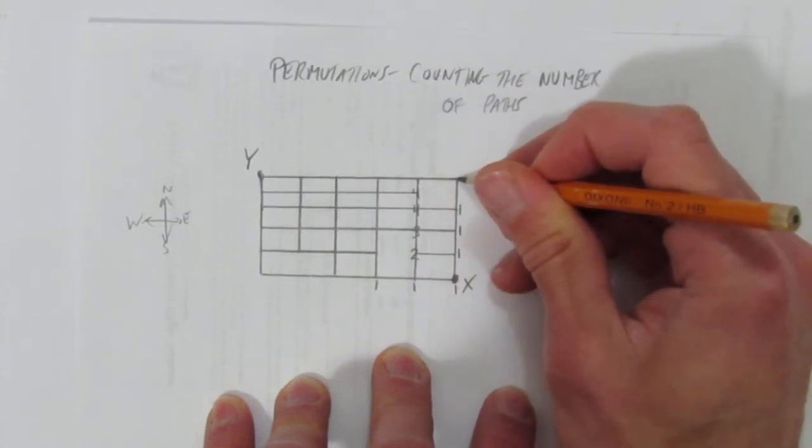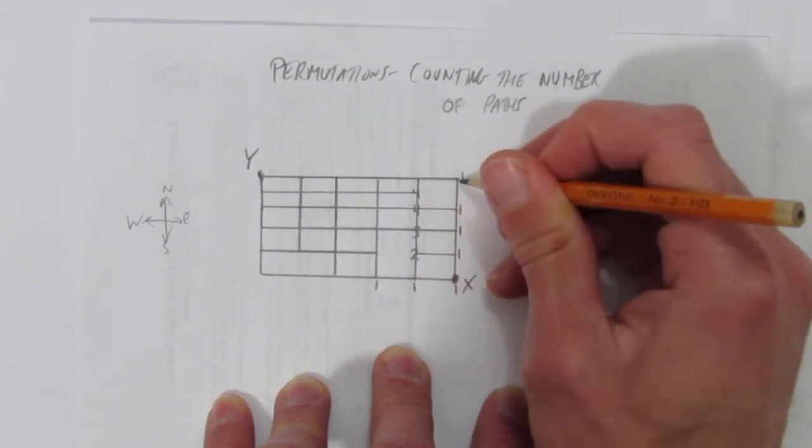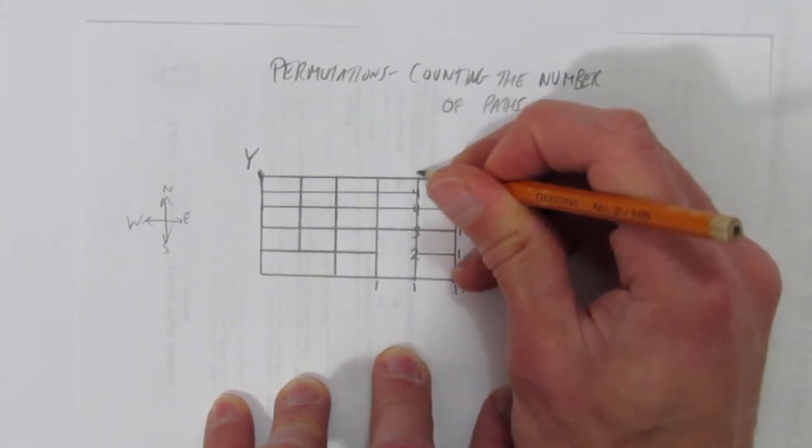Up here, the only way to get here was to walk straight north every time. So that's a one. But to get to this spot, you could either come from the one or come from the four. That's a five.